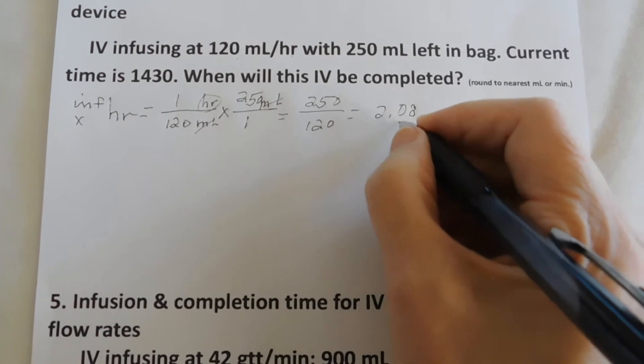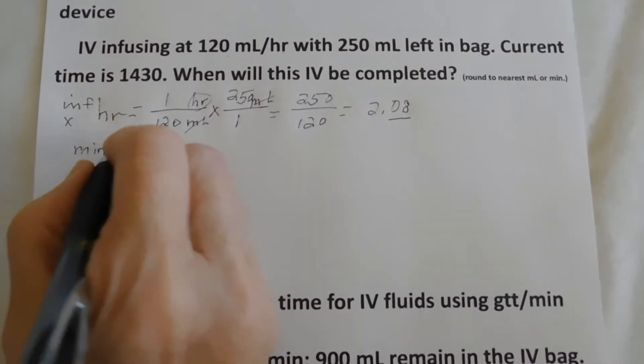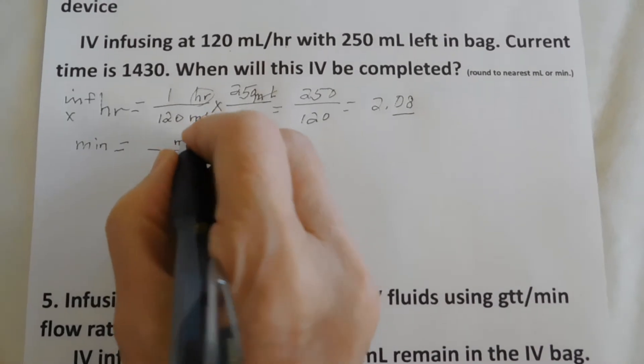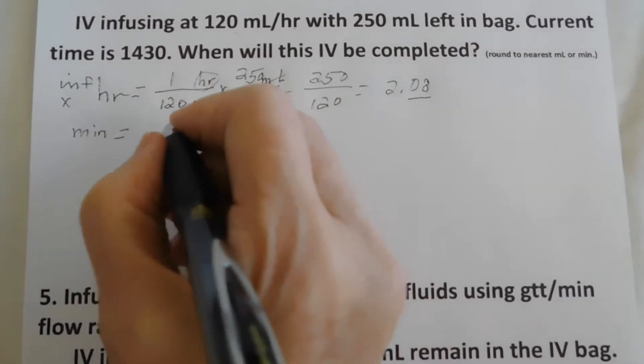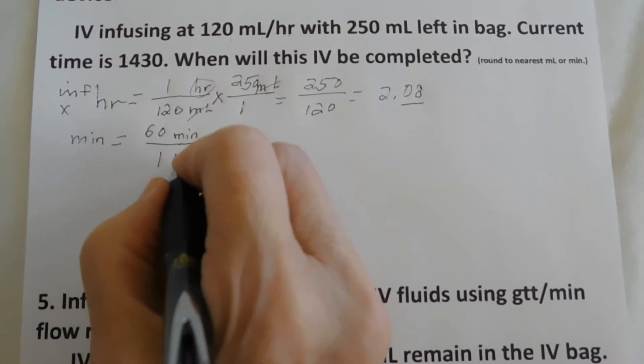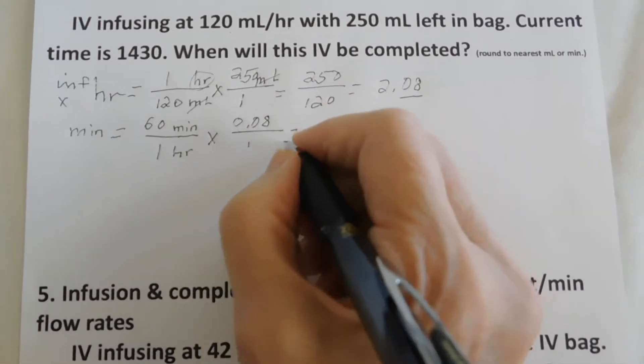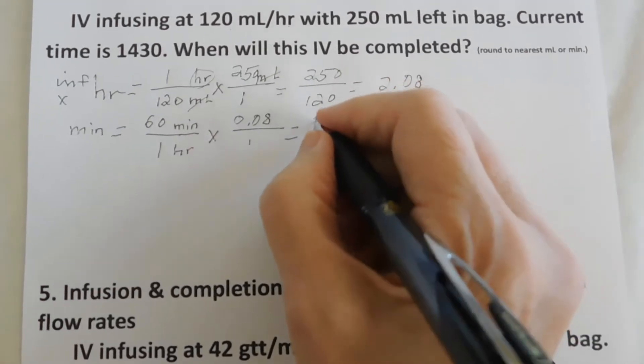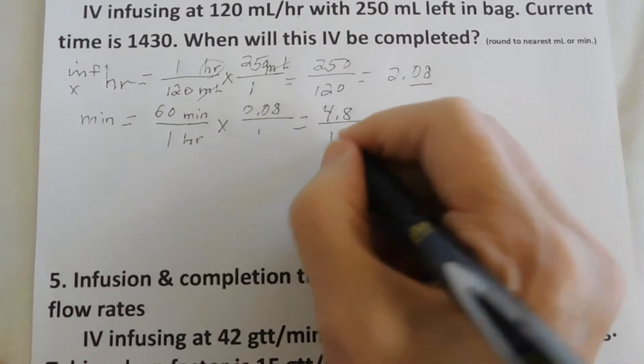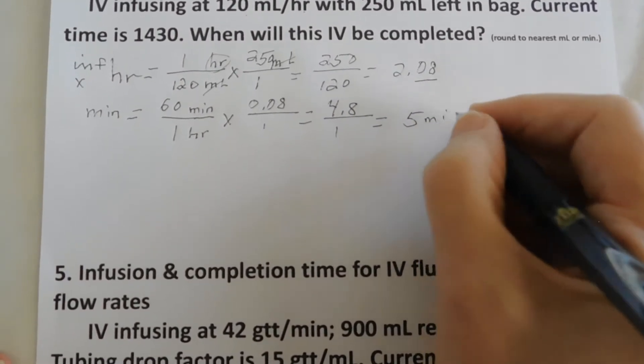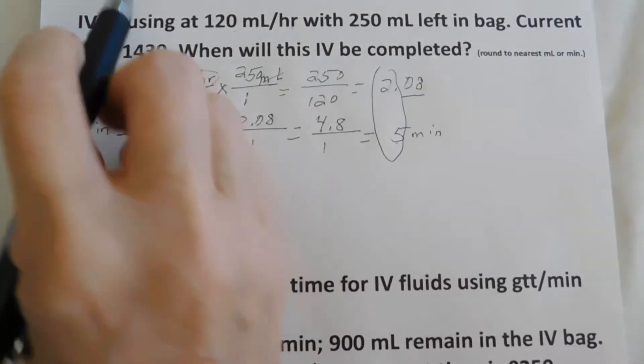2.08 hours. Well, what is 0.08 of an hour? We need to find out. So we're going to calculate minutes equals. Minutes goes on top. And we need a conversion factor. 0.08 hours is how many minutes. So we need a conversion factor. There are 60 minutes in one hour. Climb the hill. Hours is hour 0.08 over 1. We're ready to calculate that. And it comes to 4.08 which equals 5 minutes. 5 minutes. So we have 2 hours and 5 minutes. And that is our infusion time.